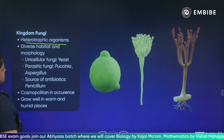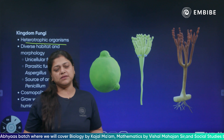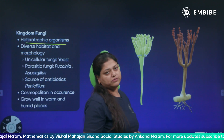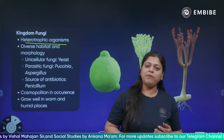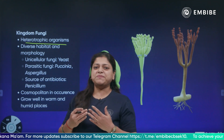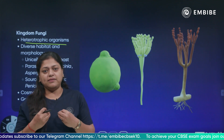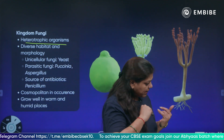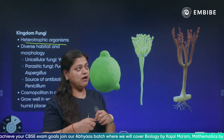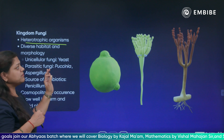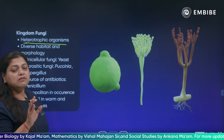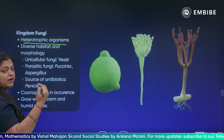Fungi are heterotrophic organisms. There are two types of nutrition — heterotrophic and autotrophic. Autotrophic organisms contain the green pigment chlorophyll and can prepare their own food. Heterotrophic organisms don't contain green pigment, so they depend on others to obtain their food — fungi can't prepare their own food.